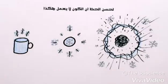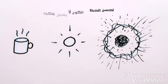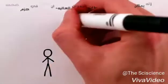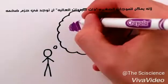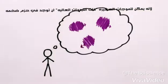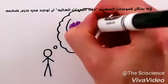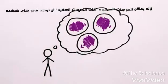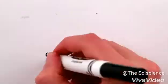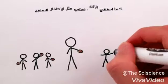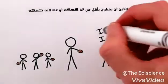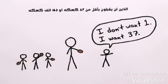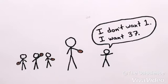Luckily, the universe doesn't work that way, because as Planck guessed, the tiny high-frequency waves can only carry away energy in huge packets. They're like fussy kids who will only accept exactly 37 cookies or 162,000 cookies.